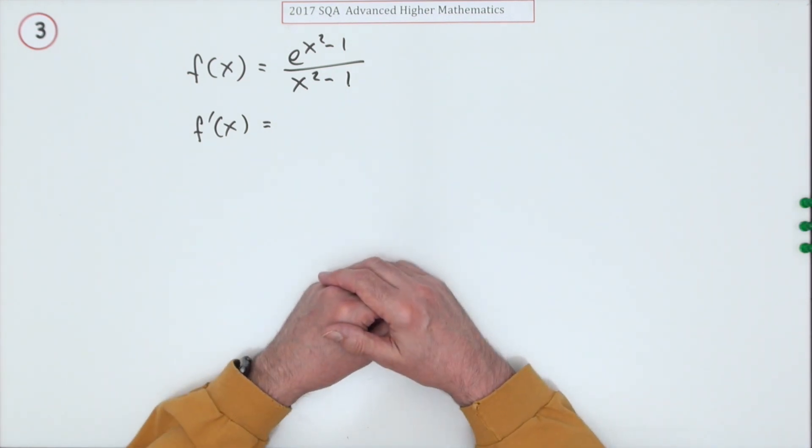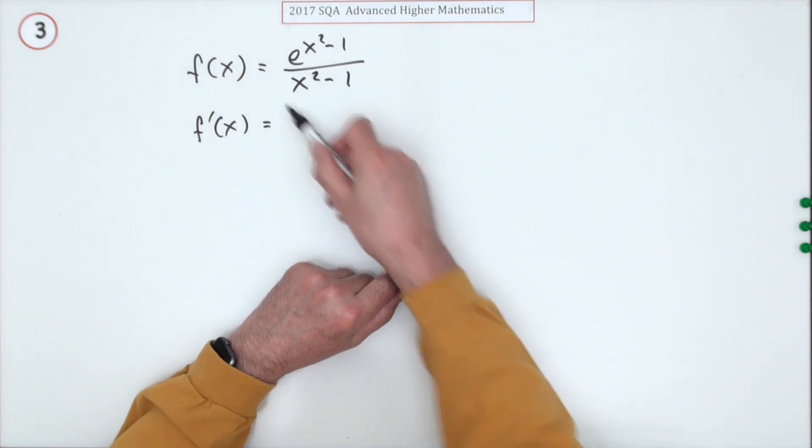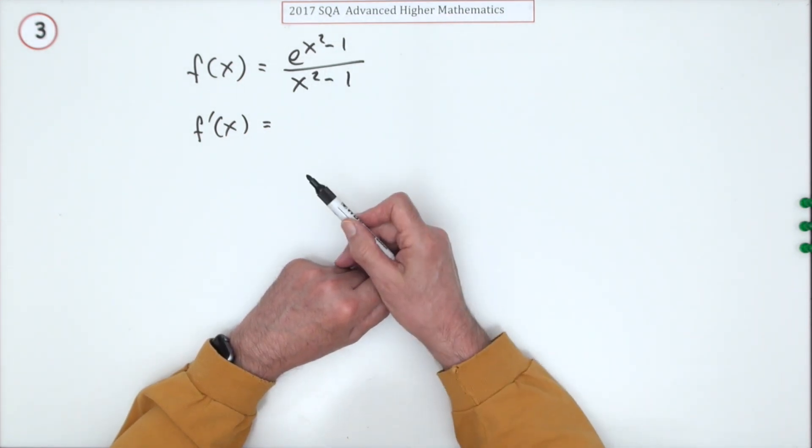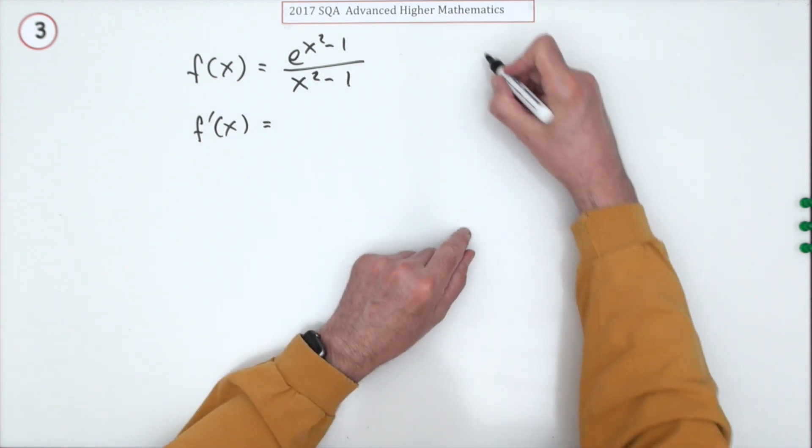One thing you might notice is there's a coincidence here: x squared minus one, x squared minus one. You could use a substitution - you could say, I'll make that...